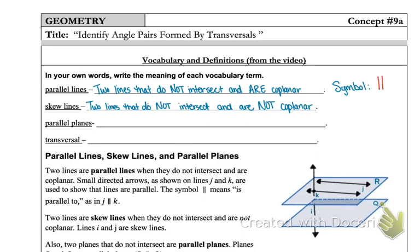Then we have parallel planes. Parallel planes are two planes that are never going to intersect. A good example of that would be the floor and the ceiling or opposite walls of a room.